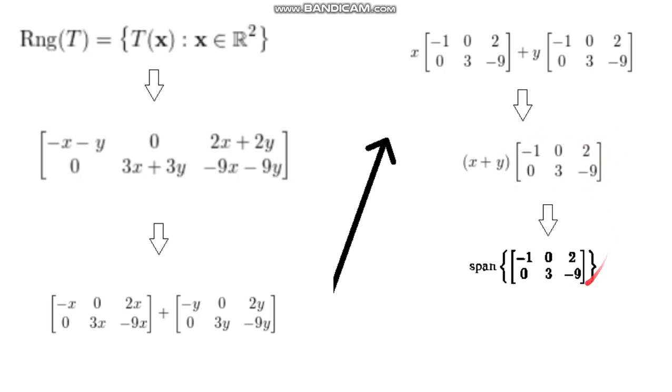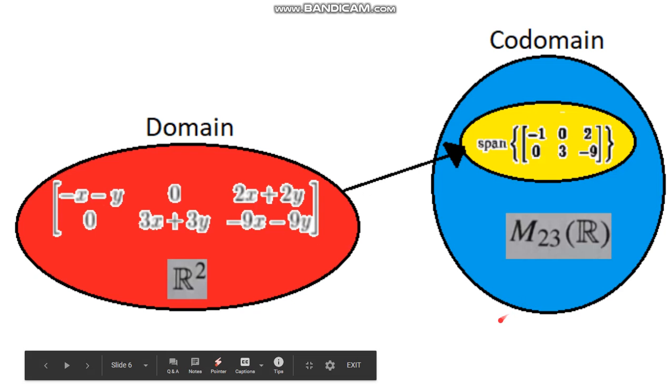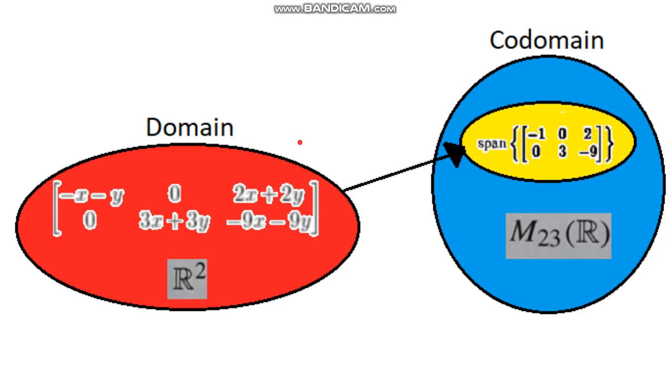And we're going to get this span over here, this matrix. That's going to be our range. Now, to further explain, here we have domain with the transformation. When we found the range of T, we found the values the transformation maps to in the codomain.